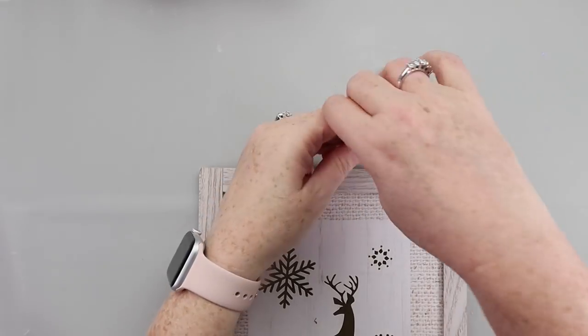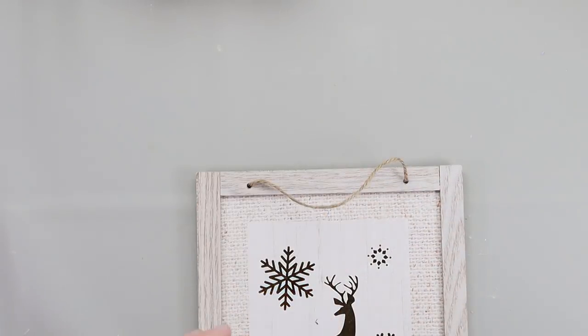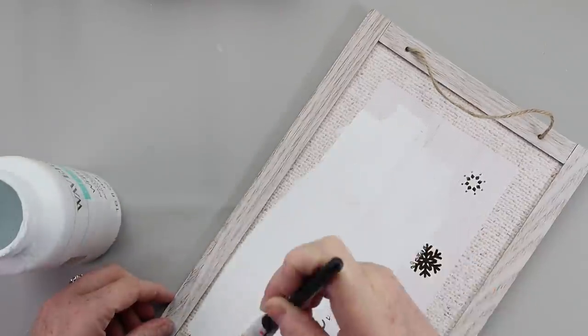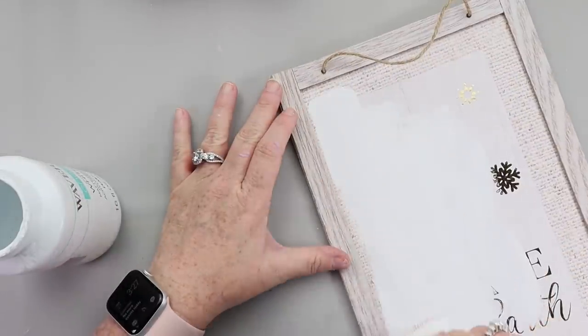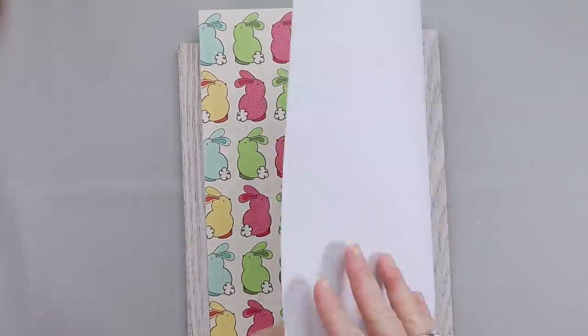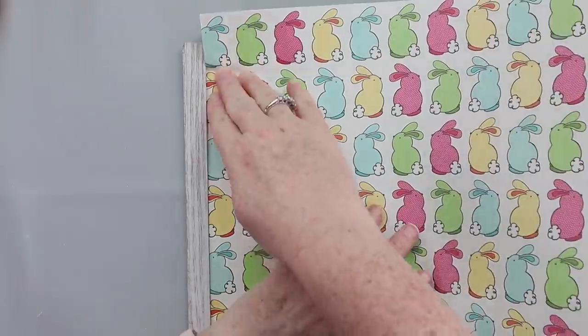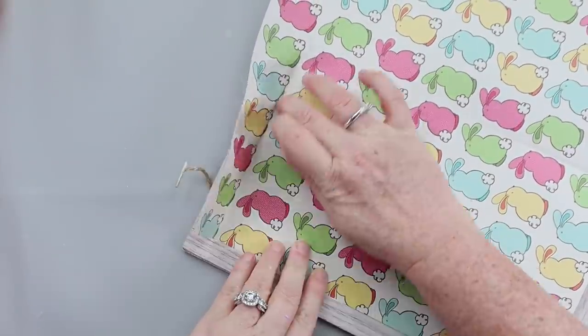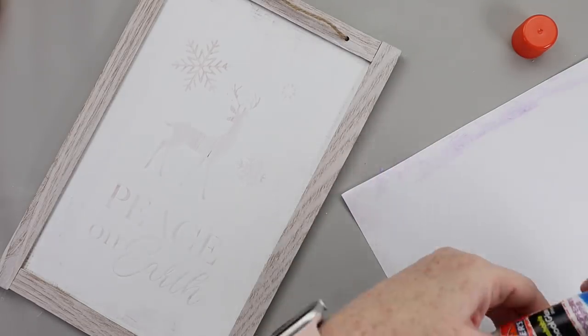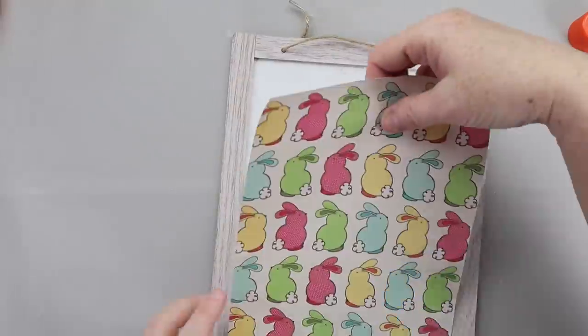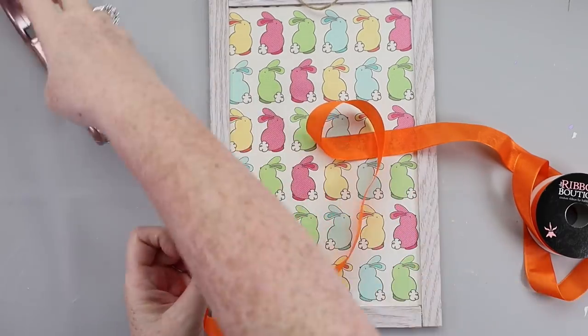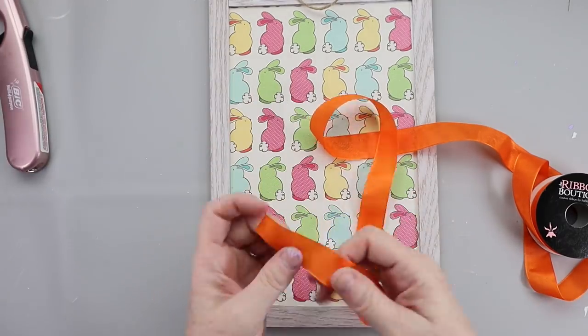For this DIY, I will be starting with the Christmas sign that was sent to me. I started by painting over the design with white paint, but after doing that, I realized I actually wanted to use scrapbook paper. So you have two options here. You could paint it and then continue on with this DIY or cover it with a cute Easter scrapbook paper. And to attach it, I just used a glue stick.